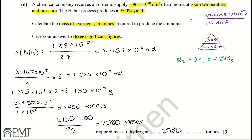To get the three marks for this question: a mark for working out moles of hydrogen (1.225 × 10⁹); a mark for the mass in tonnes (2,450 tonnes); and a mark for adjusting for the 95% yield to give 2,580 tonnes.